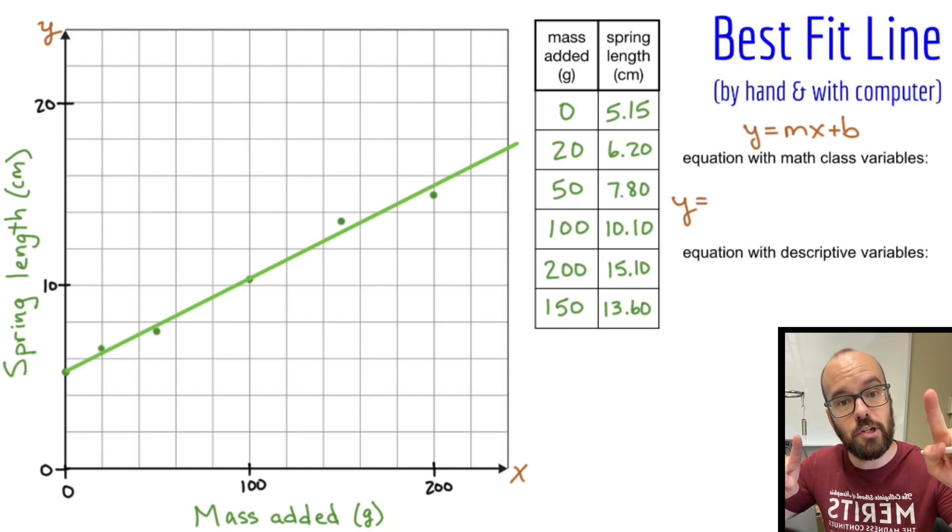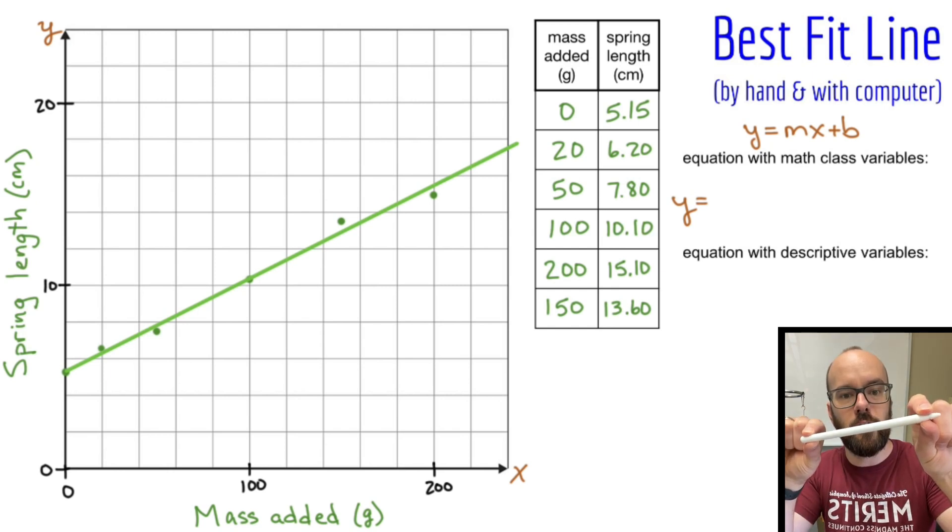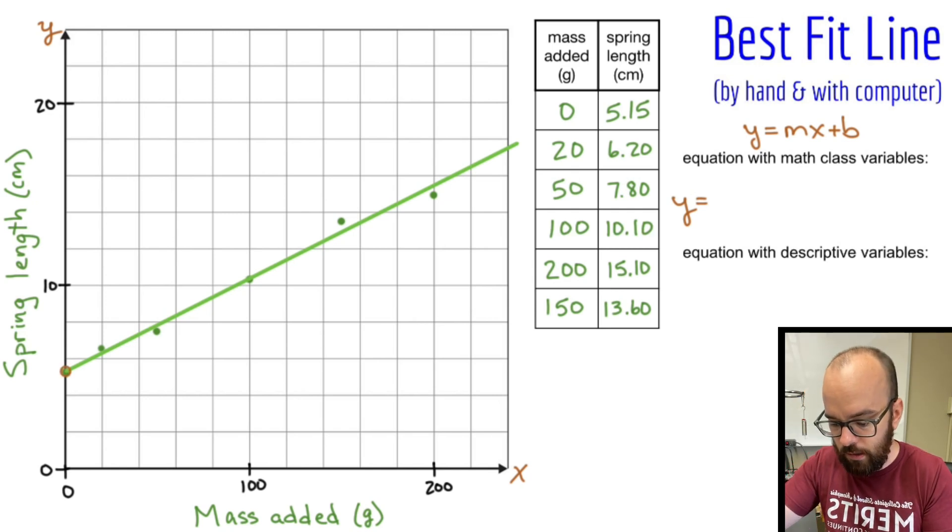But if you pick two points that are far away, you can be off by a little bit and it's not going to change the angle very much. It's kind of like this. If I'm off a little bit there, it really has a big effect on the angle. But if I'm off a little bit here, it has very little effect on the angle. So I'm going to pick this point here. I'm going to pick this point all the way on the right.